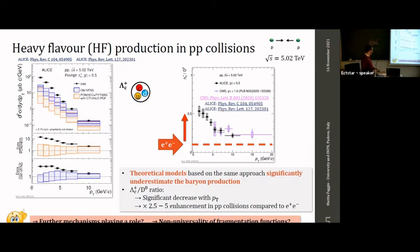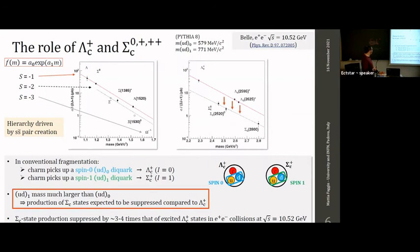This behavior opens a series of questions: whether further mechanisms are playing a role and influencing the hadronization of heavy quarks in hadronic collisions, and whether fragmentation functions can no longer be considered universal in this approach.